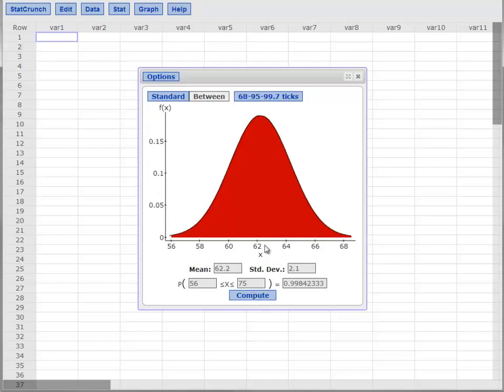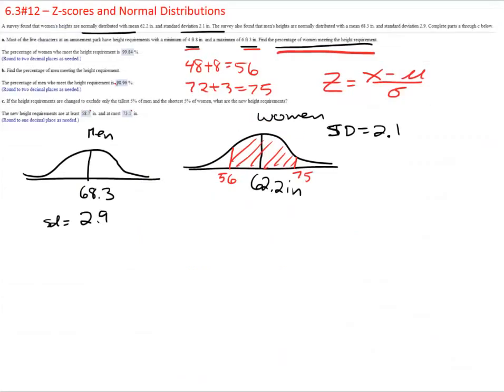You will notice that it changes the curve to now represent an average of 62.2. So there it is right in the middle. Standard deviation of 2.1. And then it goes back and forth and gives you the area between those two as .9984. So .9984, and it wants it to decimal place. So there is 99.84%.